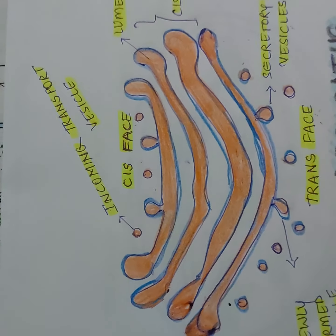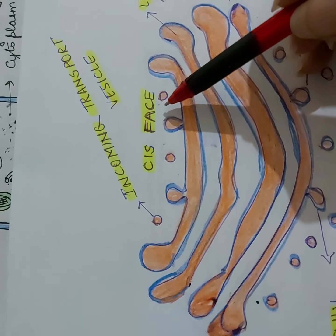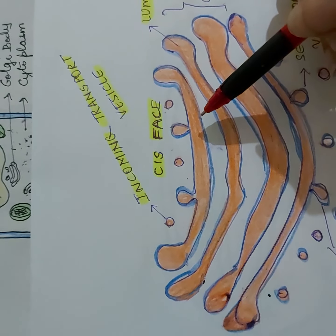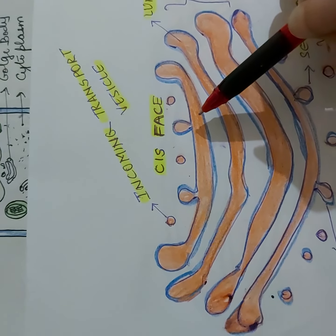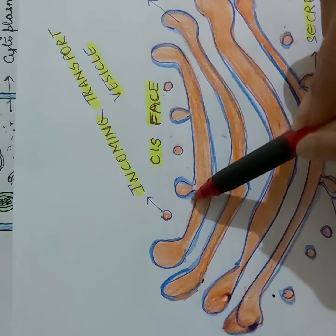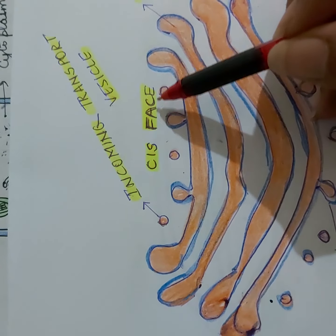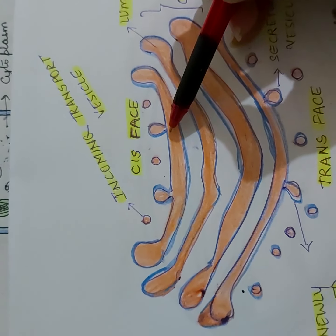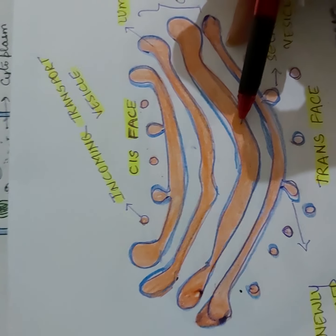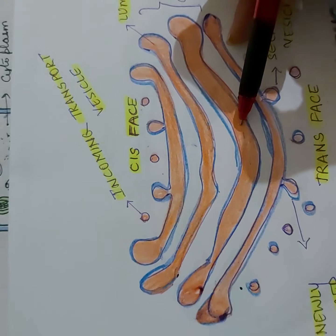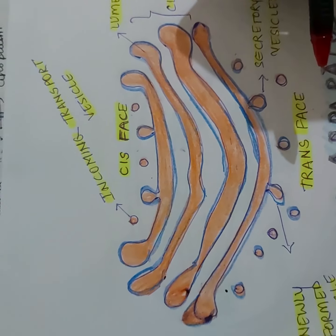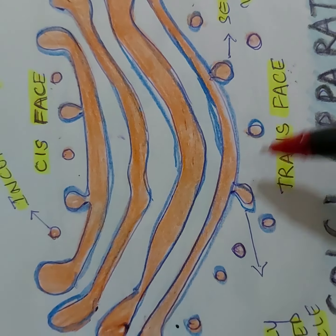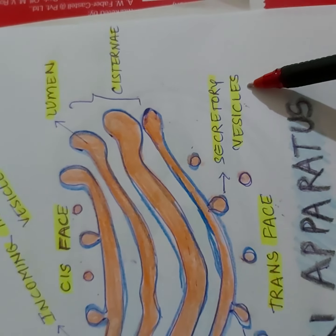The rounded or ovoid structures you can see are called vesicles. The cis face is located near the endoplasmic reticulum, so whatever proteins or products are made near the endoplasmic reticulum are received by this concave face. These proteins then enter the matrix or lumen of the Golgi apparatus, where they are modified, and then packaged into secretory vesicles at the trans face, which is the secreting end.